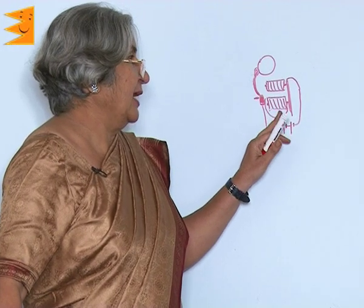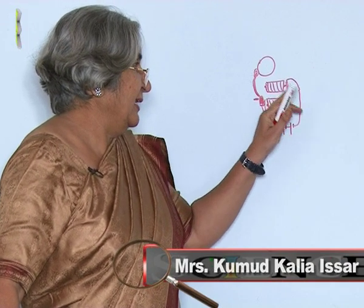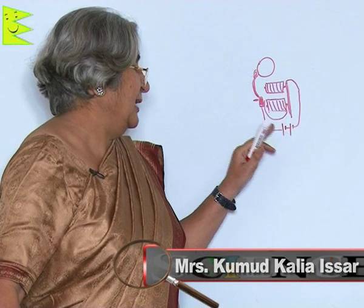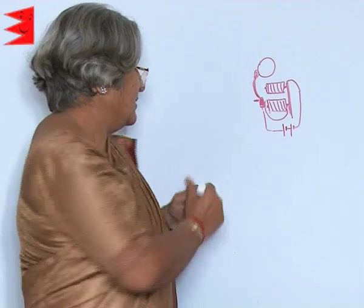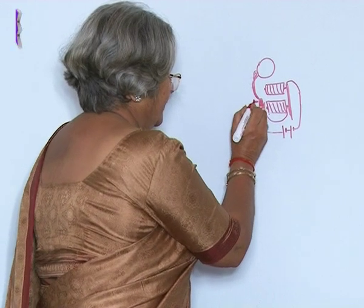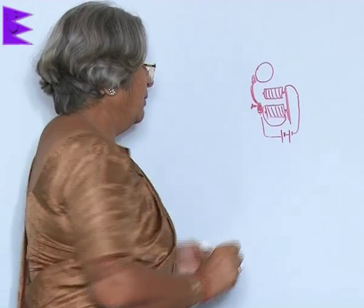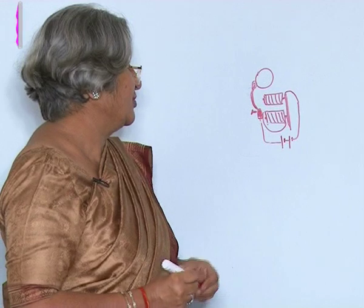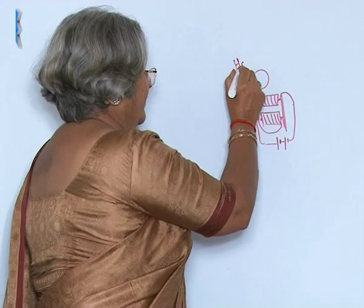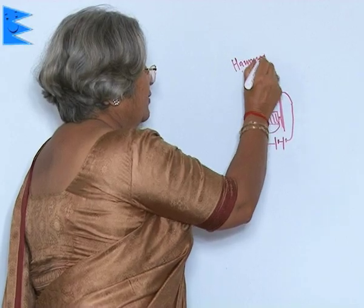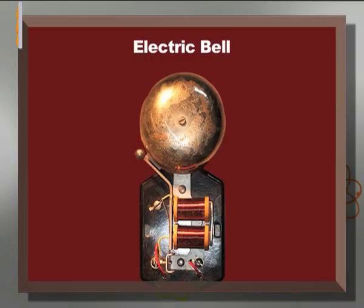Wires are coiled around the iron pieces and then they are connected through a cell with an iron strip which also has a screw. This is connected to another iron strip which has a hammer at its end — this is the hammer. When electrical current passes through this iron strip through these wires, the iron strips become magnets.